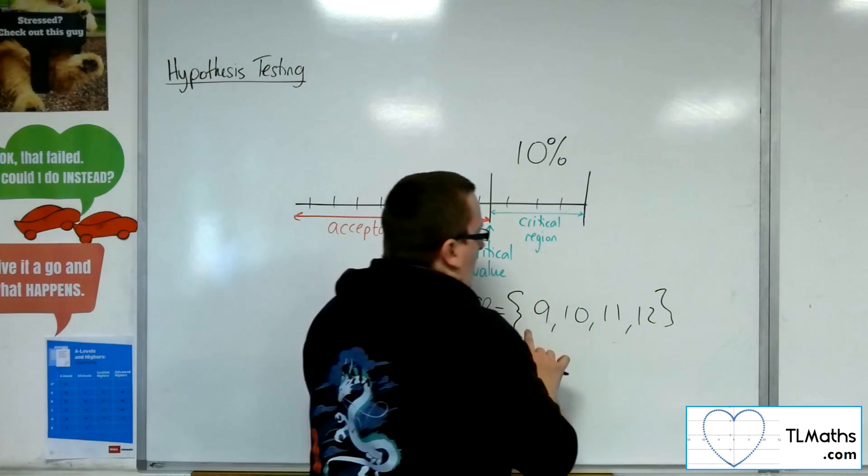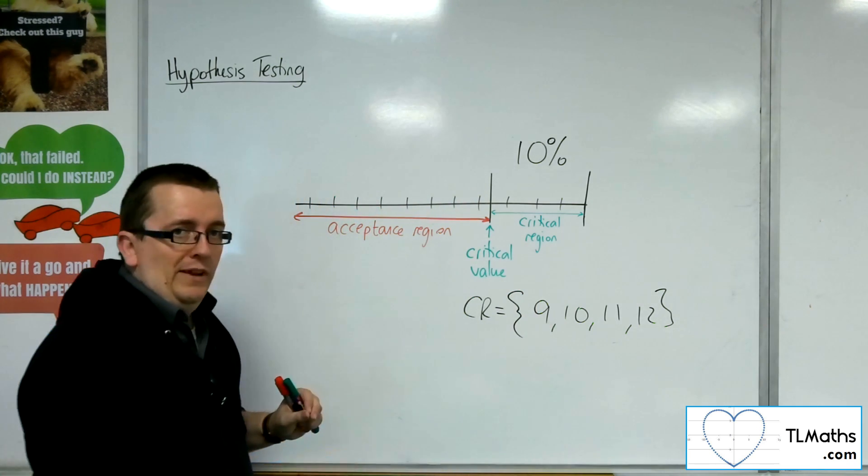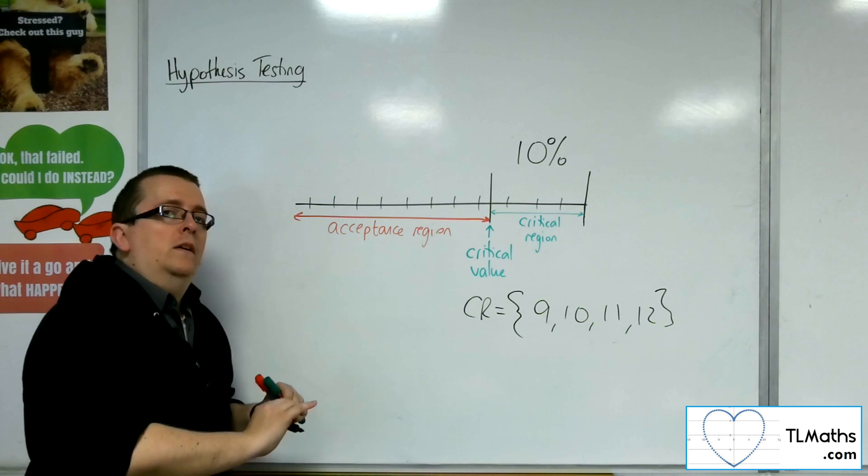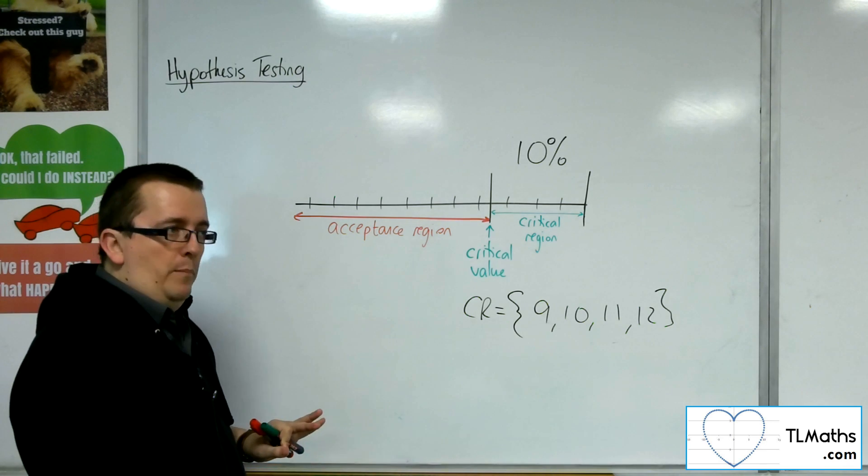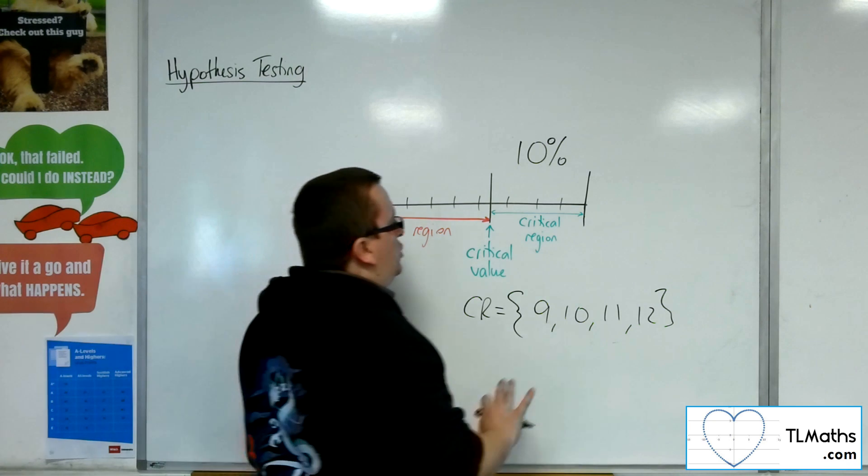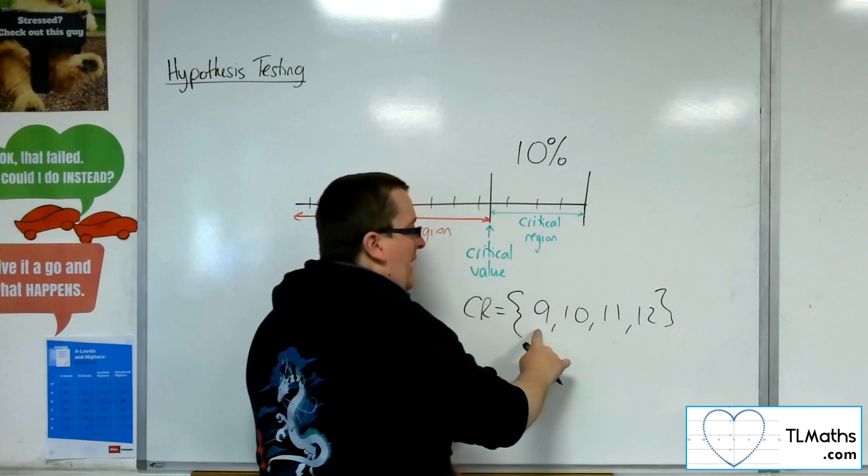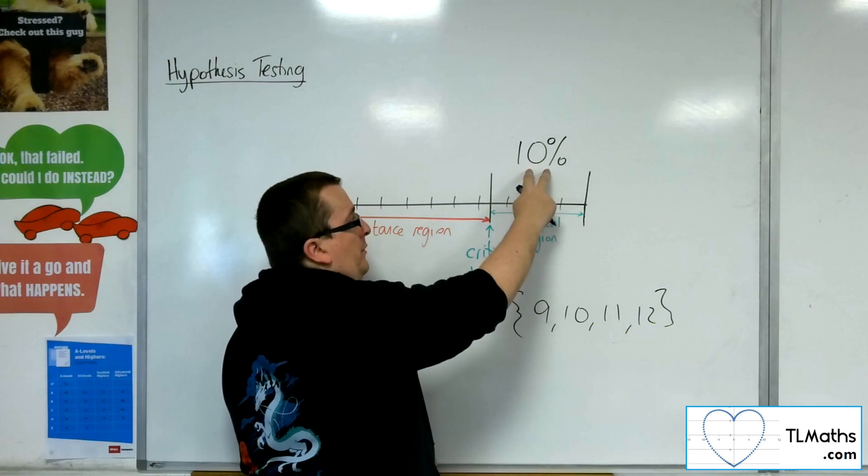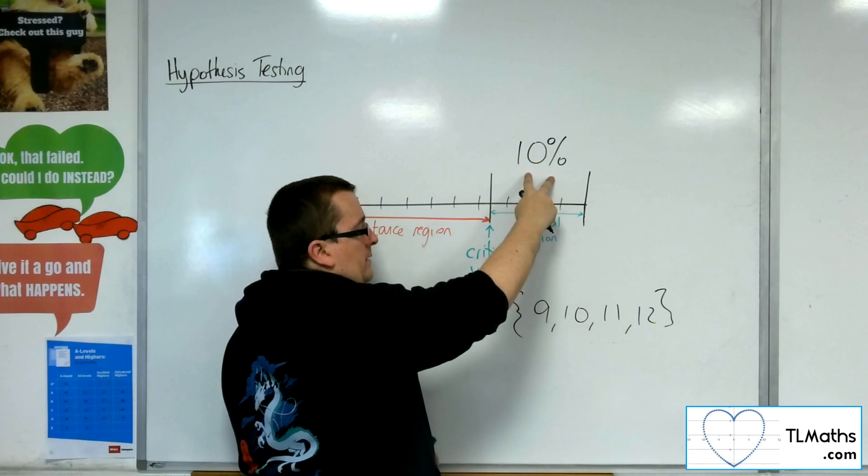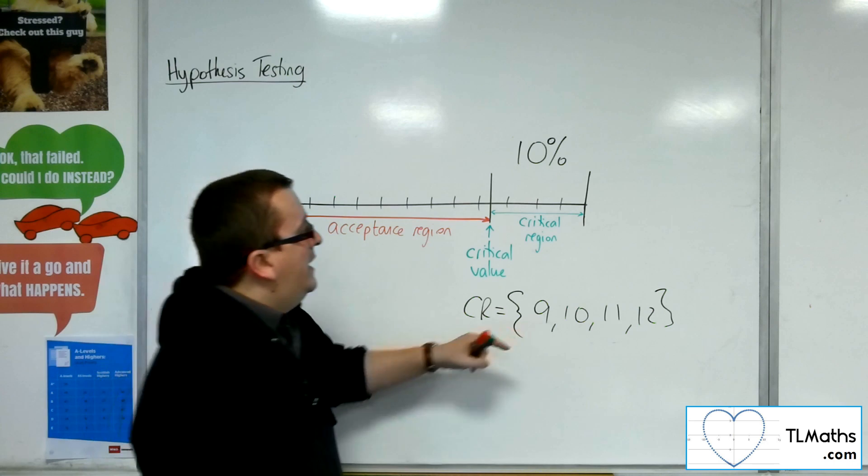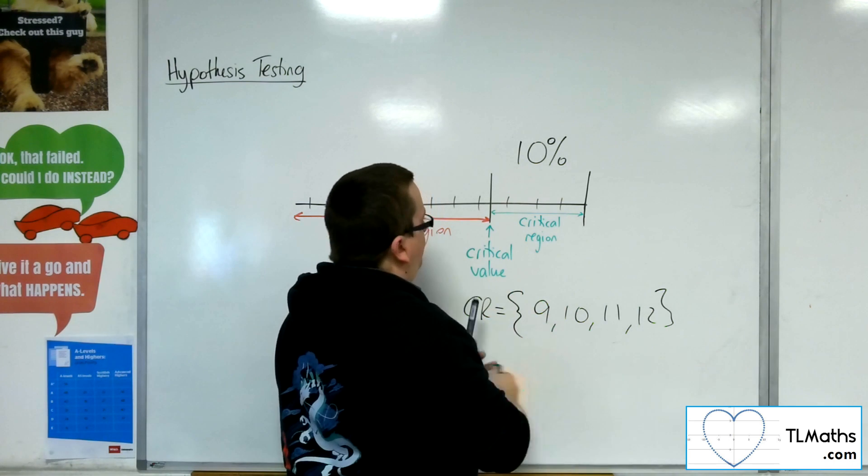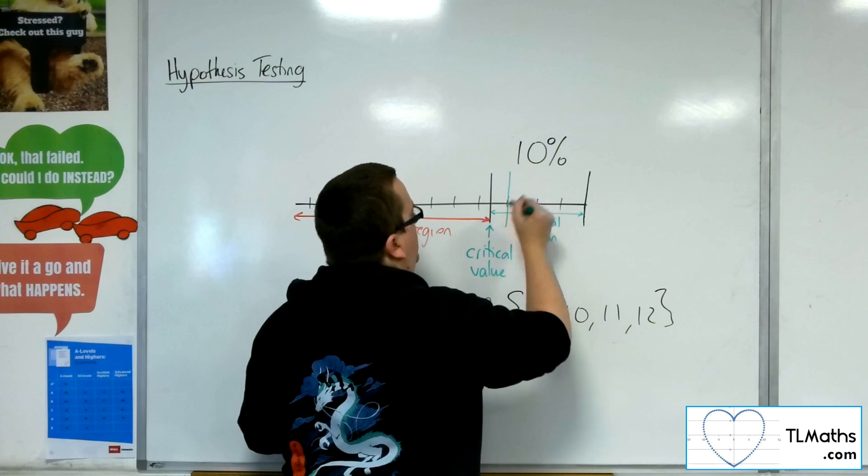Now the actual significance level, so the actual percentage that you would need to reject the null hypothesis, is actually the probability of X being greater than or equal to 9, not the 10% that we have there. So it's actually from this value onwards.